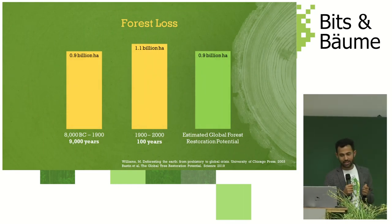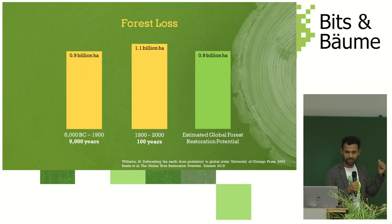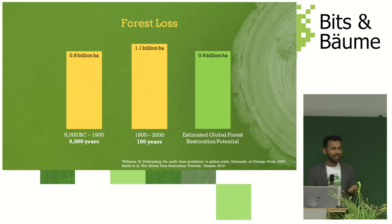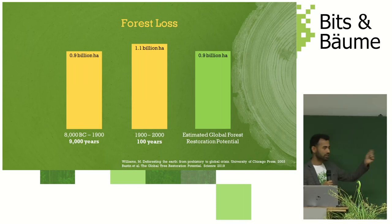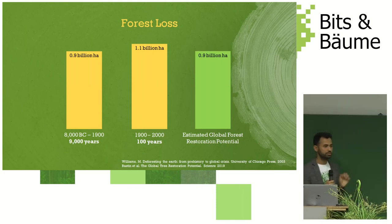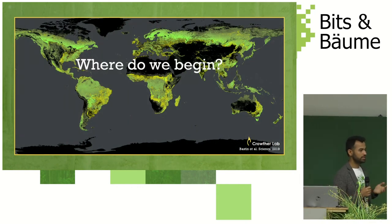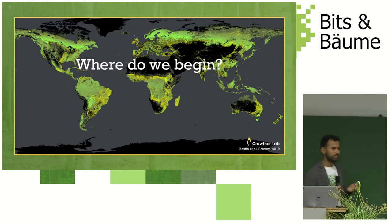This is a very interesting graph showing three blocks with almost the same amount of forests. One represents the first 9,000 years between 8,000 BC and 1900, where we lost about 0.9 billion hectares of forest — almost the same amount we lost in the last 100 years. The other number is what we can restore back. With the trillion trees goal, we are trying to restore the trees we lost in the last 100 years. Every year we are losing about 10 billion trees, so we have to do something.